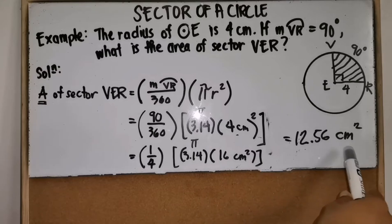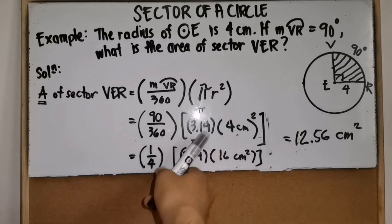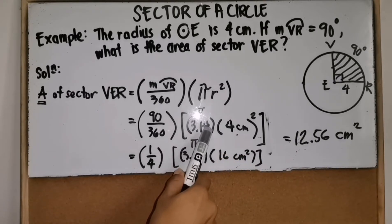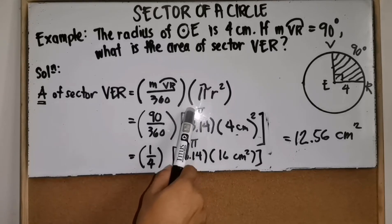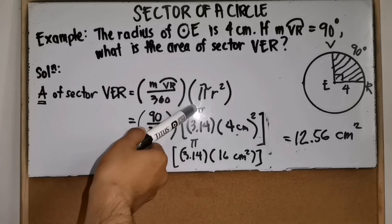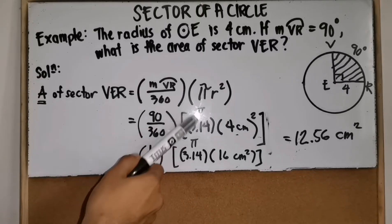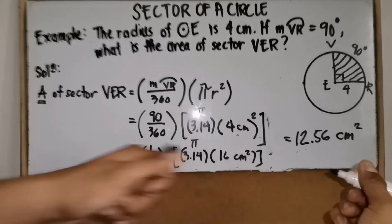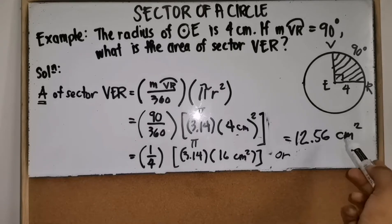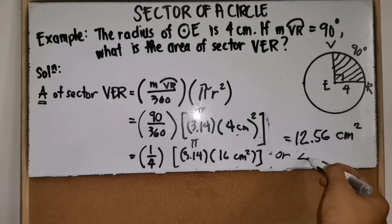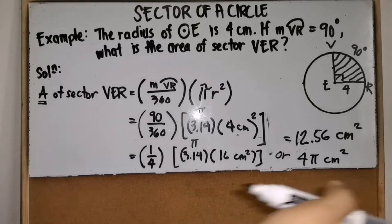If 12.56 square centimeters is not found in the choices, it is probably because 3.14 was not the value of pi used. Maybe the answer retains the pi symbol, so the final answer could be either 12.56 square centimeters or 4π square centimeters.